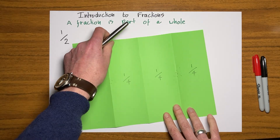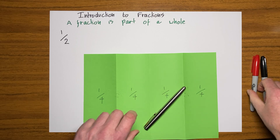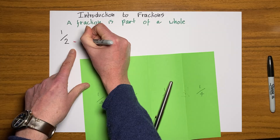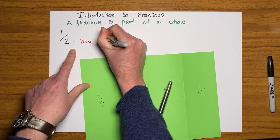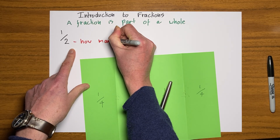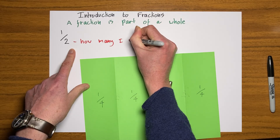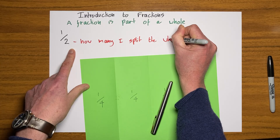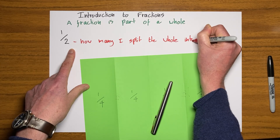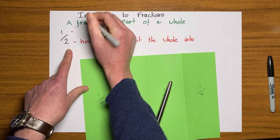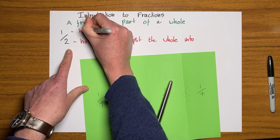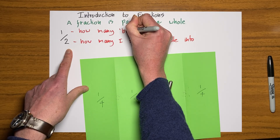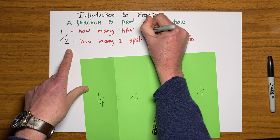I'm going to write here what these parts mean. The bottom number is how many I split the whole into, and this top number here is how many bits I want.